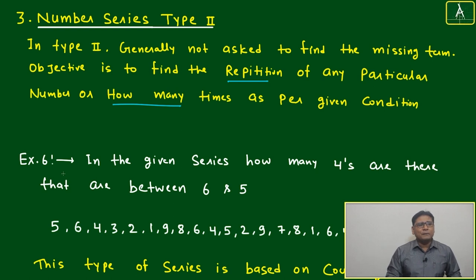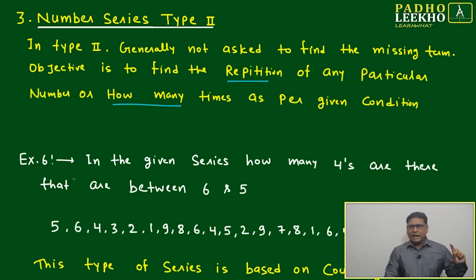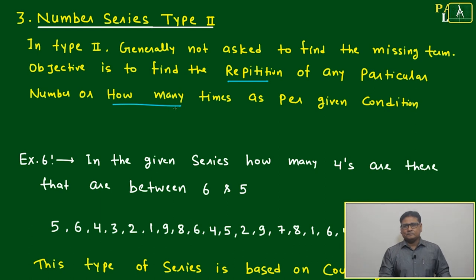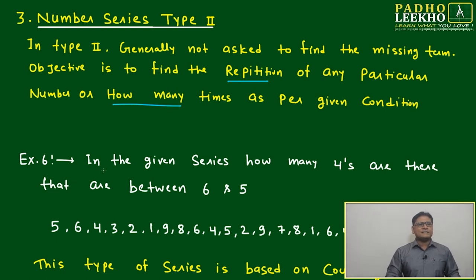Let's go through example number six to understand it. Type one was finding the missing term. Type two is finding how many times a number repeats based on certain conditions, not just plain repetition. Some constraint they will put.